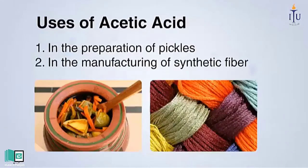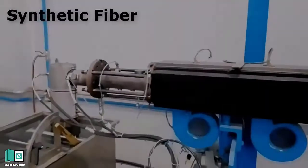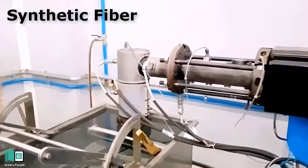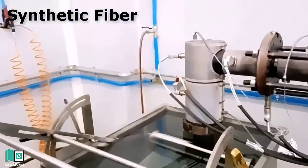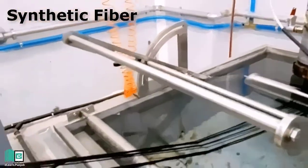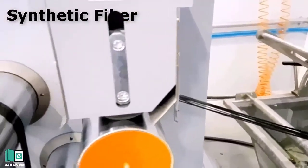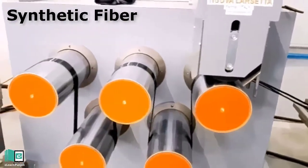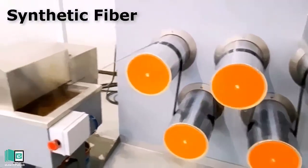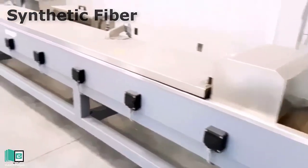Uses of Acetic Acid. Number 1: In the preparation of pickles. Number 2: In the manufacturing of synthetic fiber. As you can see in the picture, there is a thread — it is a synthetic fiber, and acetic acid is used to make it. Now I'll ask you a question: the color coded on these threads — can you tell me which acid is used in that color dye?